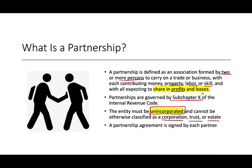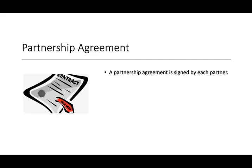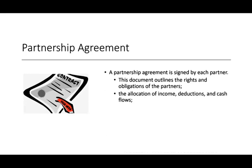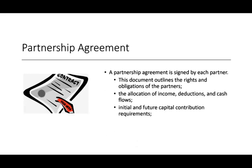You should have a partnership agreement signed by each partner. You don't have to, but it's preferable that you do. The partnership agreement is basically a contract between the partners. This document outlines the rights and obligations of each partner, including the allocation of income, deductions, and cash flow, the initial and future capital contributions, and conditions for terminating the partnership.